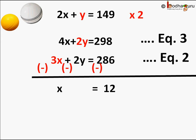4X minus 3X equals X. 2Y minus 2Y cancel each other, that is, it is 0. 298 minus 286 equals 12. So X equals 12, that is, cost of yellow rubber ball is 12 rupees.